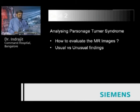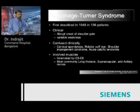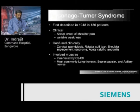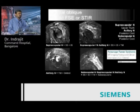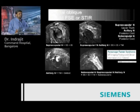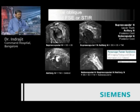Let us analyze Parsonage-Turner syndrome using this case. This syndrome was first described in 1948 in a series of patients, characterized clinically by an abrupt onset of shoulder pain with variable weakness, and often confused clinically with a variety of shoulder entities. The involved muscles are innervated by the C5 to C8 roots. The sagittal oblique image is what was described in this particular article, but one can use axial and oblique coronals to analyze more clearly in the early stages of learning.